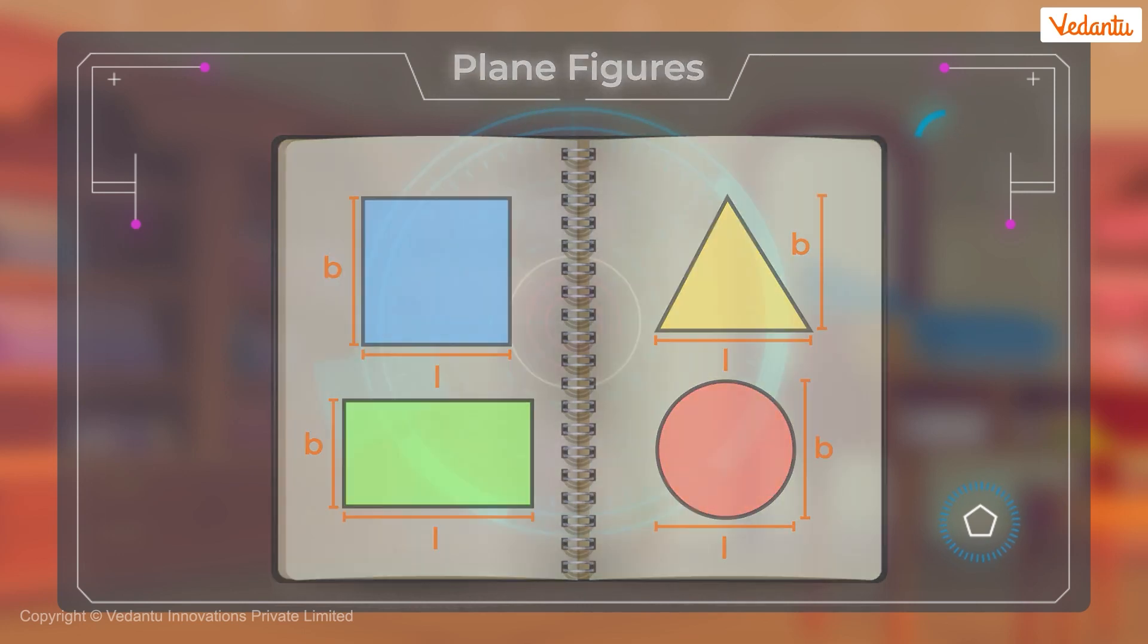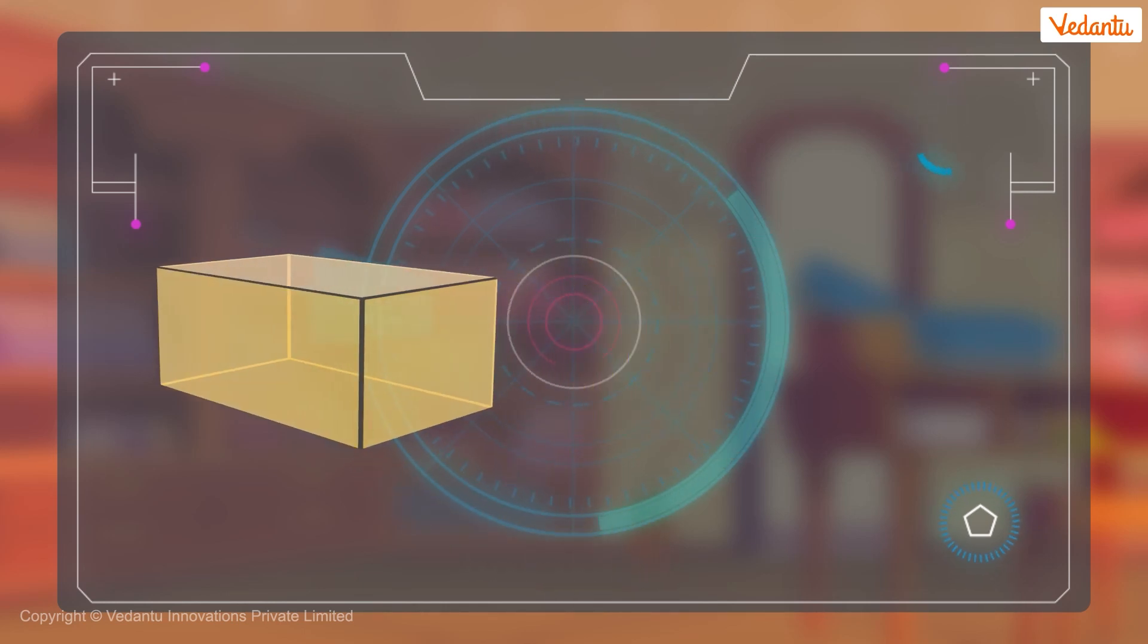Now, let's look at the cuboid. It resembles our shoe box. Just like our shoe box, it has three measurements. Length, breadth and height. So, it is a three-dimensional object. And we call them solid shapes or figures.